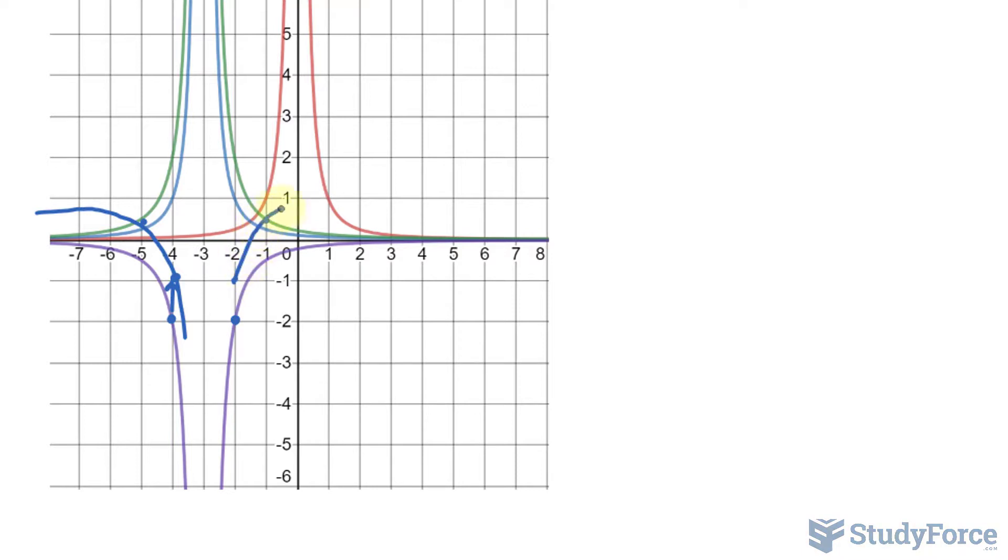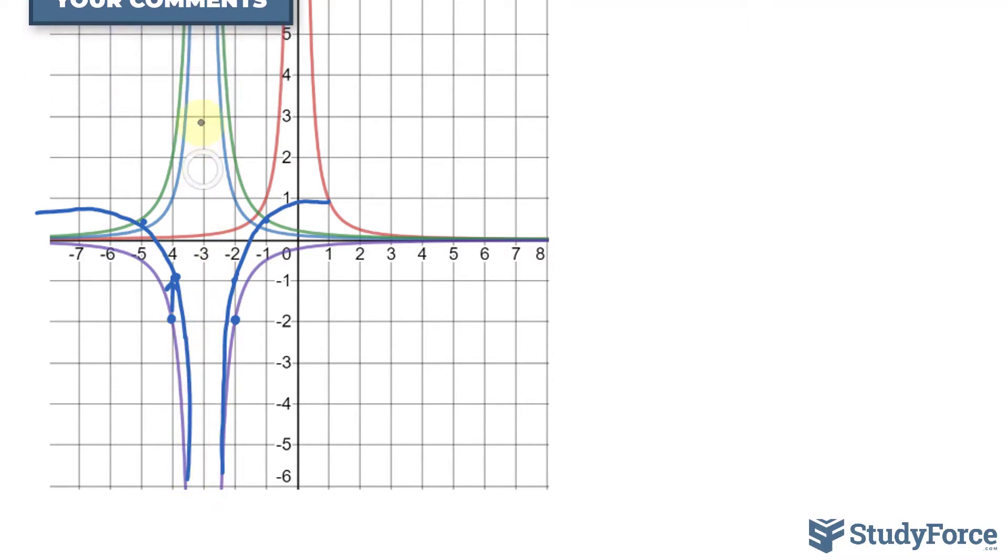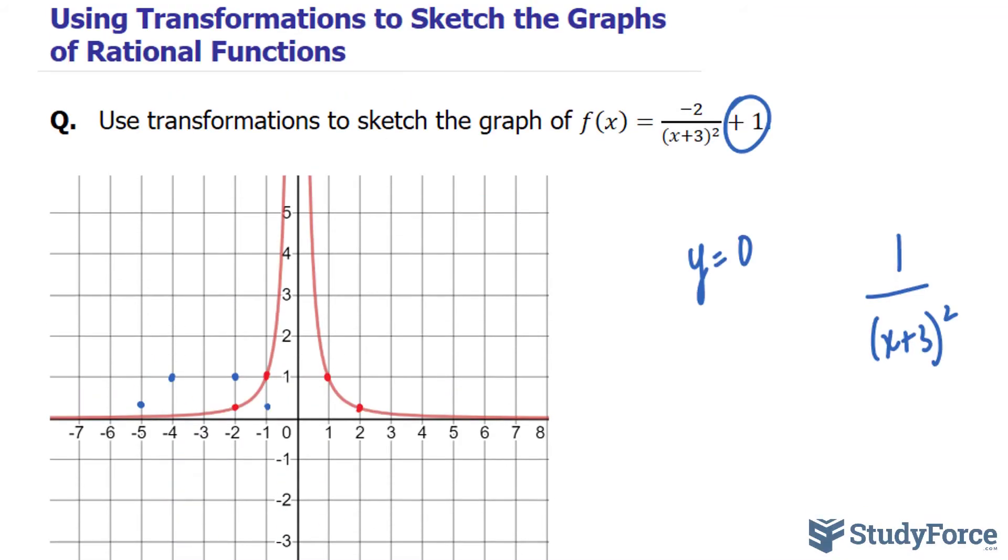And the same thing for this. So as you can see, it doesn't reach 1. And it will have the same vertical asymptote had you found it. The graph that you see on your screen is the new graph given all of these transformations. And there you have it. That is how to use transformations to sketch the graphs of rational functions.